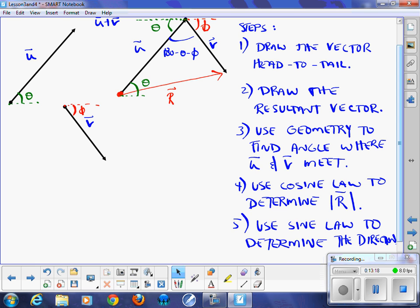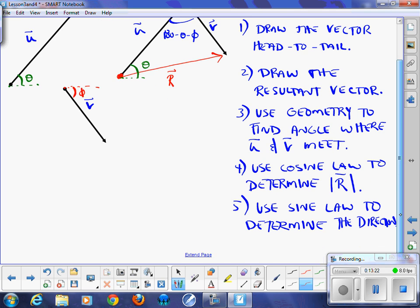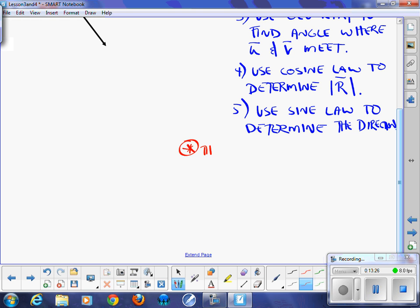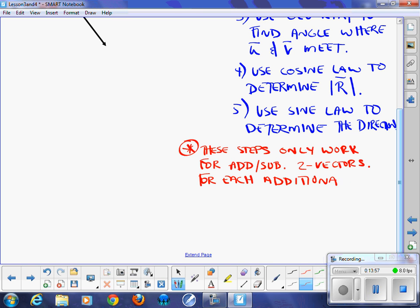So the one thing I do want you to make a note of. These steps only work for adding two vectors. For add slash subtract two vectors. For each additional vector, repeat the process. So we talked about in grade 11 why the algebraic method is more efficient when you had two or three or more vectors. Two vectors some people are quicker with the geometric. So you can go ahead and use it. For each additional vector, all right, repeat the steps.